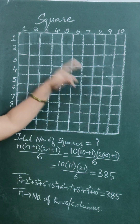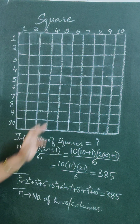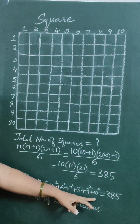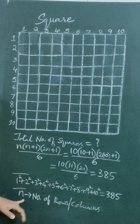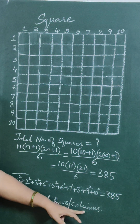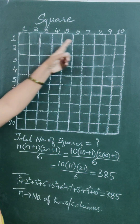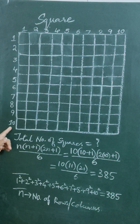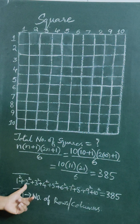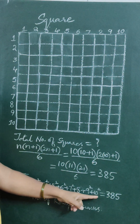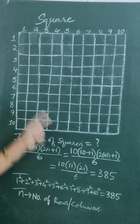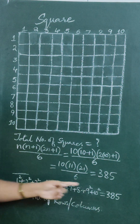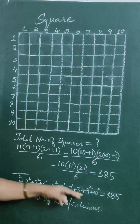The total number of squares within a square is equal to the sum of squares of the first n natural numbers. Here, n means number of rows or number of columns. Number of rows equals 10 and number of columns equals 10. We can use 1 squared plus 2 squared up to 10 squared. After simplification, the answer is 385.